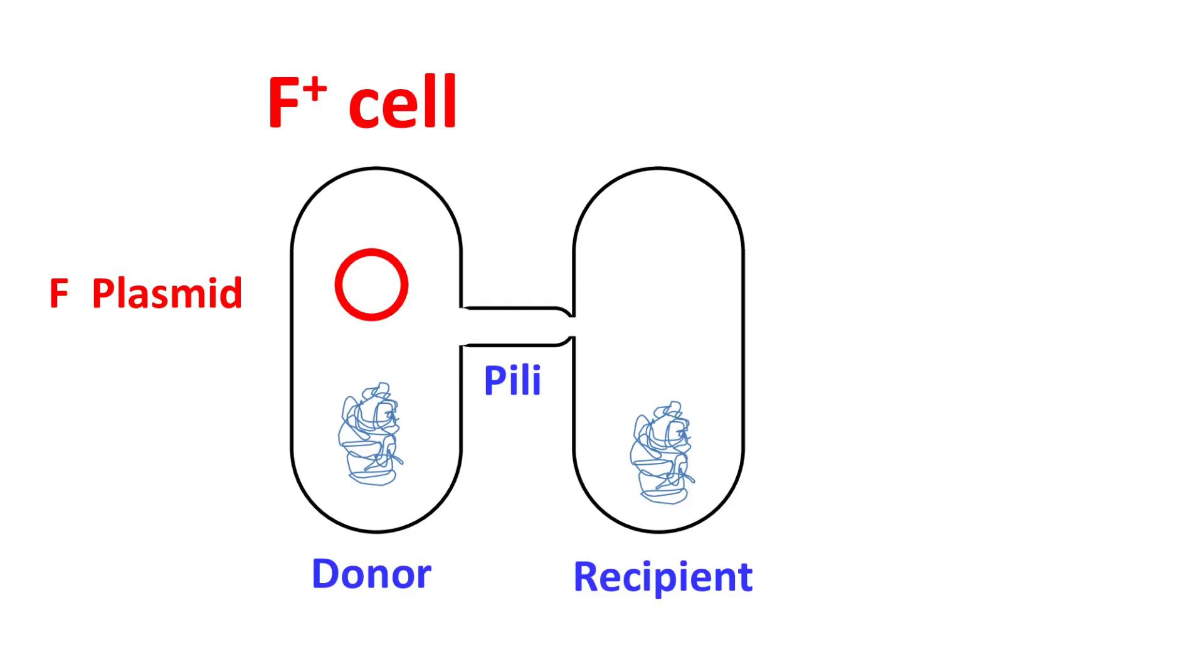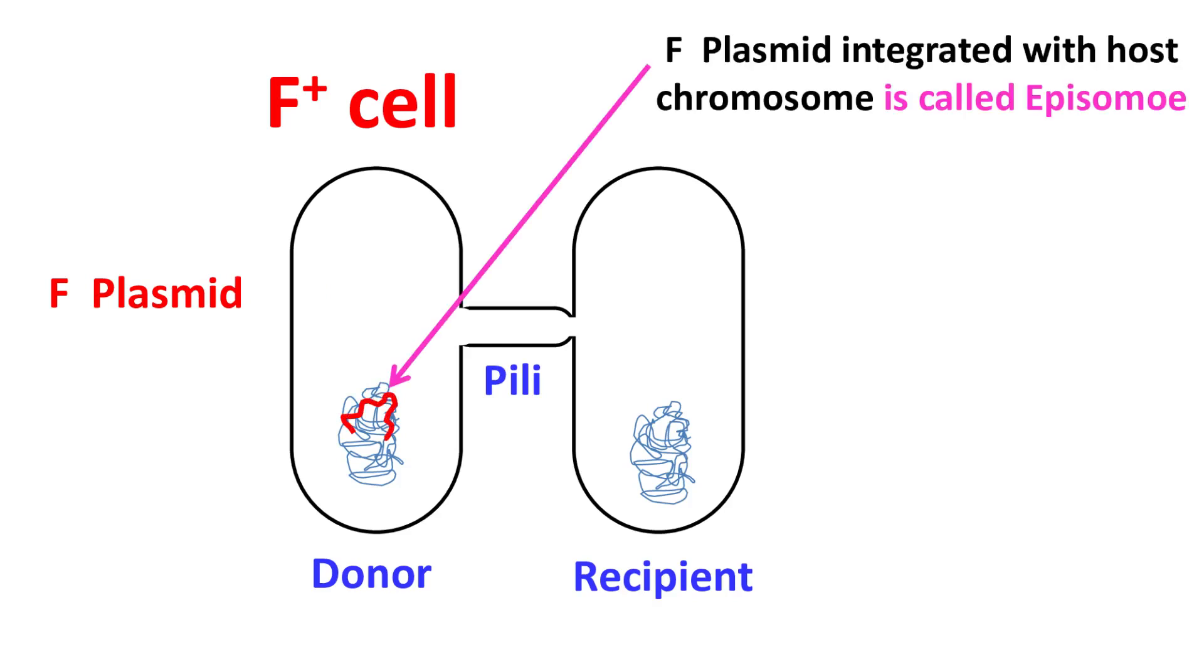Sometimes the F-factor can also integrate itself with the chromosome. This integrated form of F-plasmid is known as the episome.